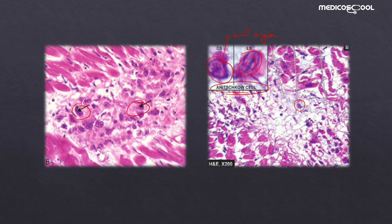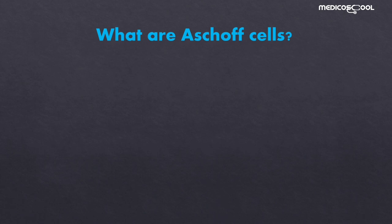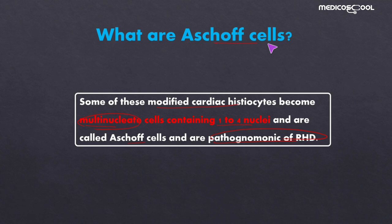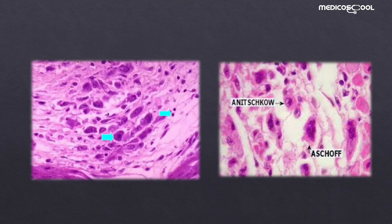Aschoff cells are also characteristic of Aschoff nodules. These are modified cardiac histiocytes or Anitschkow cells that have become multinucleated — combining to form cells containing one to four nuclei — and are called Aschoff cells. They are the pathognomonic of rheumatic heart disease. The slides shown here demonstrate Aschoff cells, including large Aschoff cells containing many nuclei, alongside Anitschkow cells.